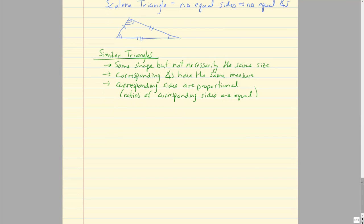To notate similar triangles, we label corresponding vertices — for instance, angle A corresponds to A prime, angle B corresponds to B prime, and angle C corresponds to C prime. The bottom-left angle of one triangle equals the bottom-left of the other, bottom-right equals bottom-right, and because those two pairs are equal, the top angle must be equal as well.